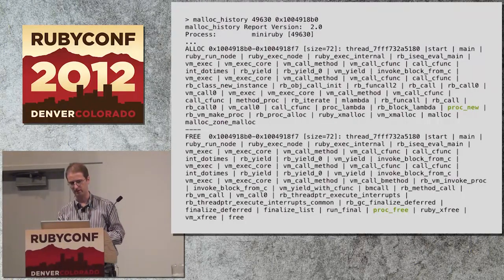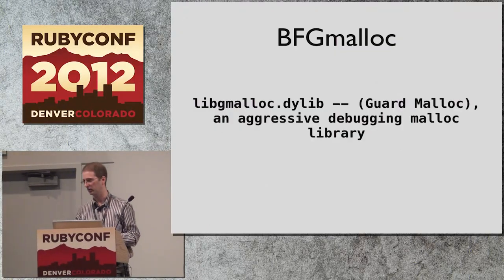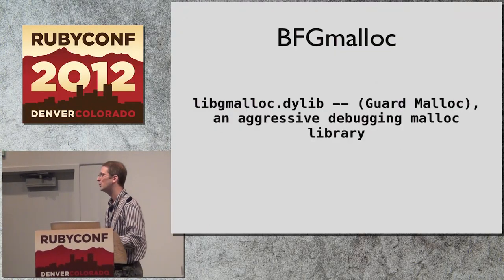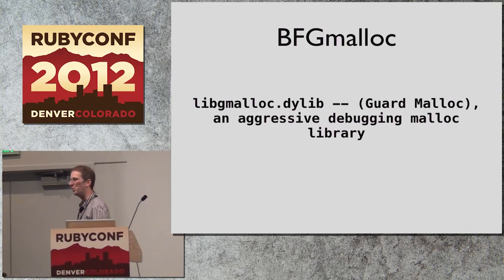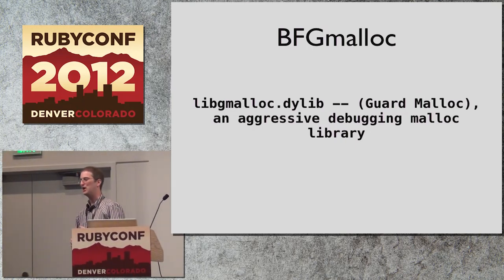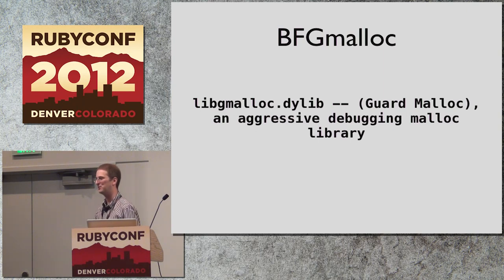You can look through this log and make sure every allocation and free is matched up. The last allocation was a proc_new that allocated it, and then a proc_free that freed it — this matches up, and if you go back through the history, it matches up the whole way back. That didn't actually tell us much of anything. Kind of cool to look at, but we need something else — we need gmalloc.